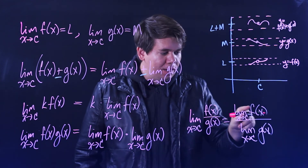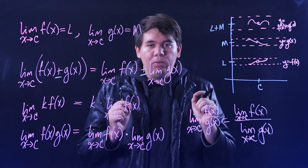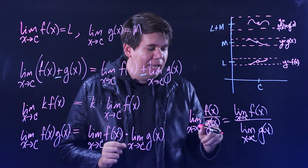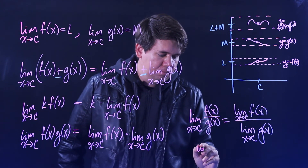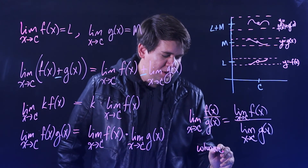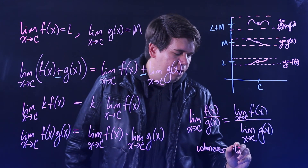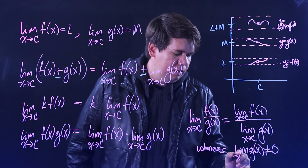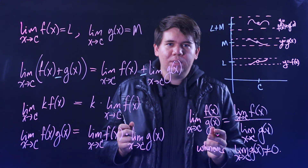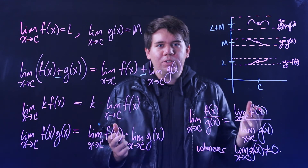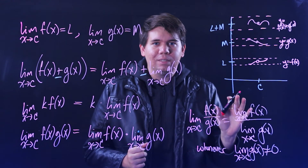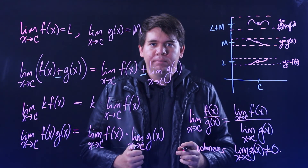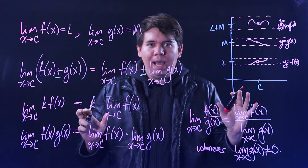I say 'almost true' because there's one case to worry about: whenever you have division, you don't want to divide by zero. So this will be true as long as the limit of G of X is not zero. We'll see a few examples in upcoming videos that show us what to do if you do get into situations where it seems like you're being asked to divide by zero.